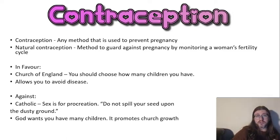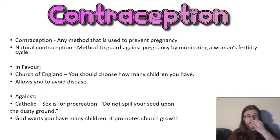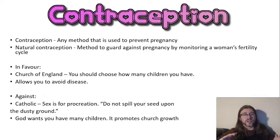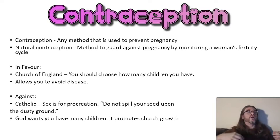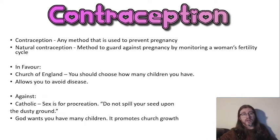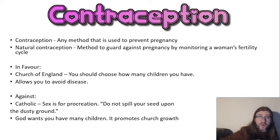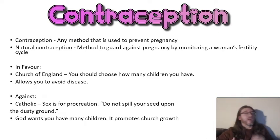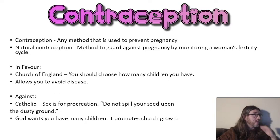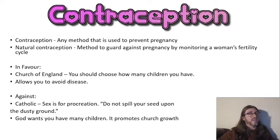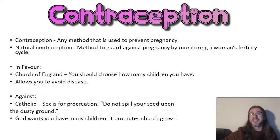Should we be allowed to use contraception? In favour: the Church of England says yes, you should be able to choose how many children you have. You should only have the number of children you can look after. God is all loving and wants us to have good and happy families. It allows you to avoid disease - God doesn't want you to get HIV, AIDS or syphilis. Therefore contraception is a good thing and the Church of England allows it.